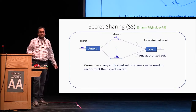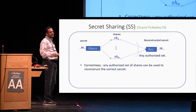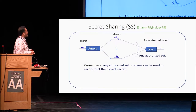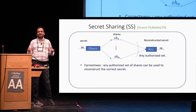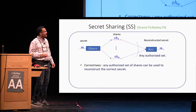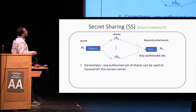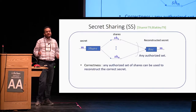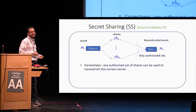The reconstruction algorithm takes some subset of these strings, what is called an authorized set — for example, any t out of these n strings — and is supposed to recover the original secret. There are two key properties to be satisfied. First is correctness, which says that any authorized set of shares can be used to reconstruct the correct secret — the message we end up with should be the message we started with.